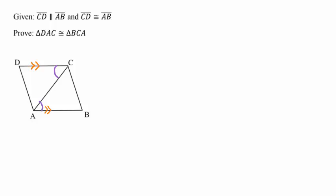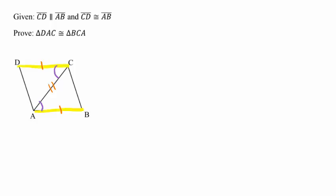Going back to the given information, I'm going to erase the parallel marks on the diagram and mark the sides as congruent, since the given information also tells us they're congruent. So from the given information we got one pair of congruent sides and one pair of congruent angles. That's not enough yet to conclude that the triangles are congruent, but we notice the triangles share a side. So line segment AC is congruent to itself. We can now see that the two triangles are congruent because of side, angle, side.